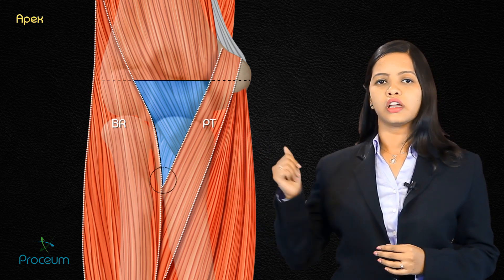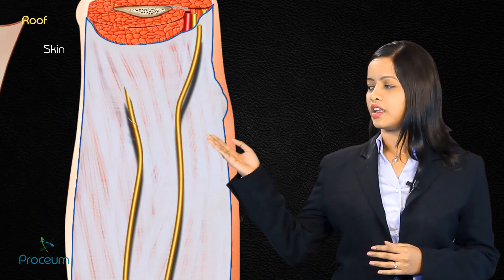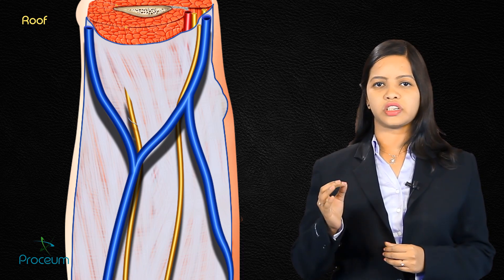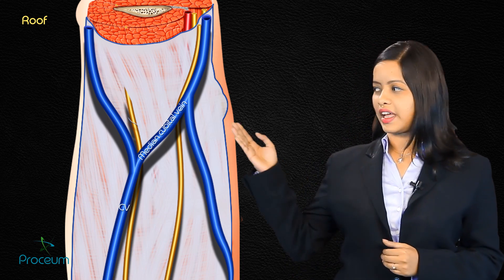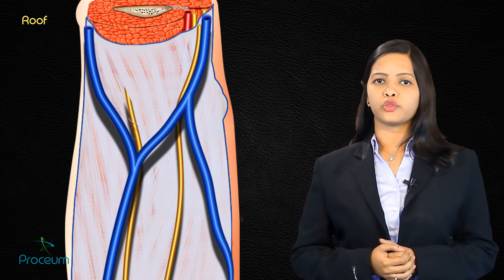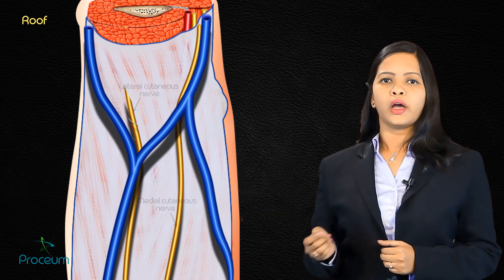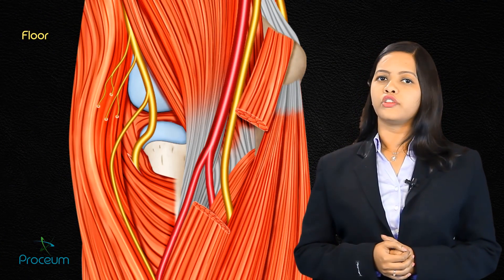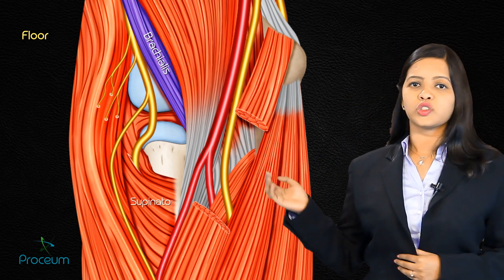The roof contains skin, superficial fascia — which contains the medial cubital vein connecting the cephalic vein and the basilic vein — along with the lateral cutaneous nerve, medial cutaneous nerve, deep fascia, and bicipital aponeurosis. The floor is formed mainly by two muscles: brachialis and supinator.